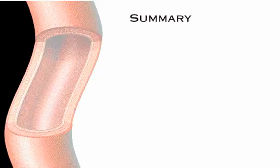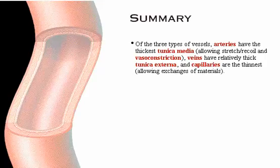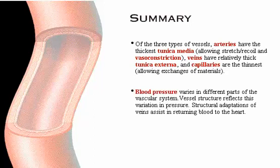Here's a summary of what we've covered. Of the three types of vessels: arteries have the thickest tunica media, allowing stretch, recoil, and vasoconstriction; veins have a relatively thick tunica externa; and capillaries are the thinnest, allowing exchanges of materials. Blood pressure varies in different parts of the vascular system, and vessel structure reflects this variation in pressure. Structural adaptations of veins assist in returning blood to the heart.